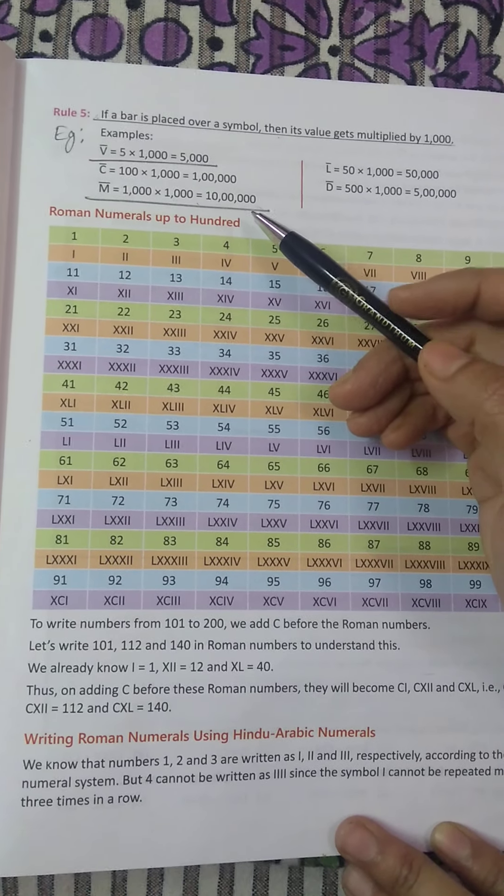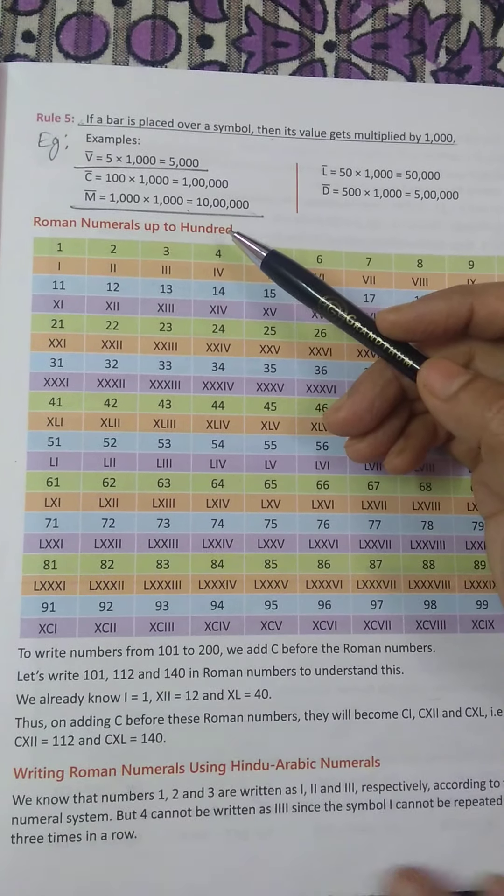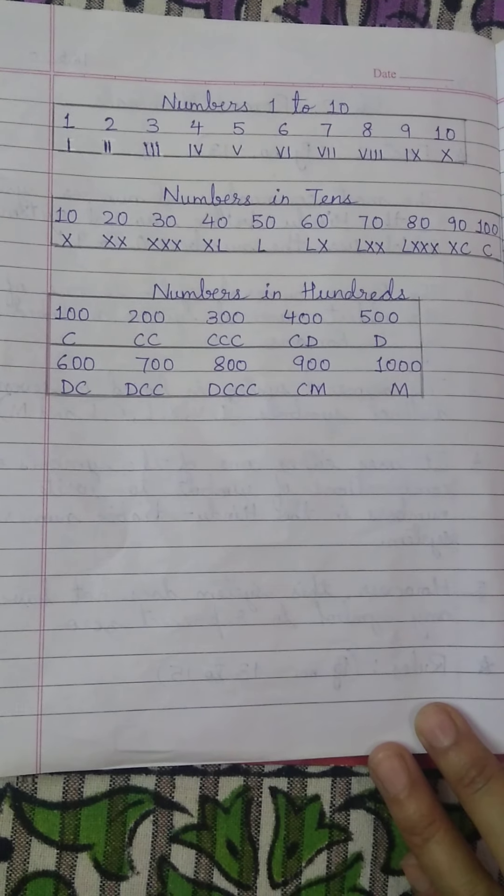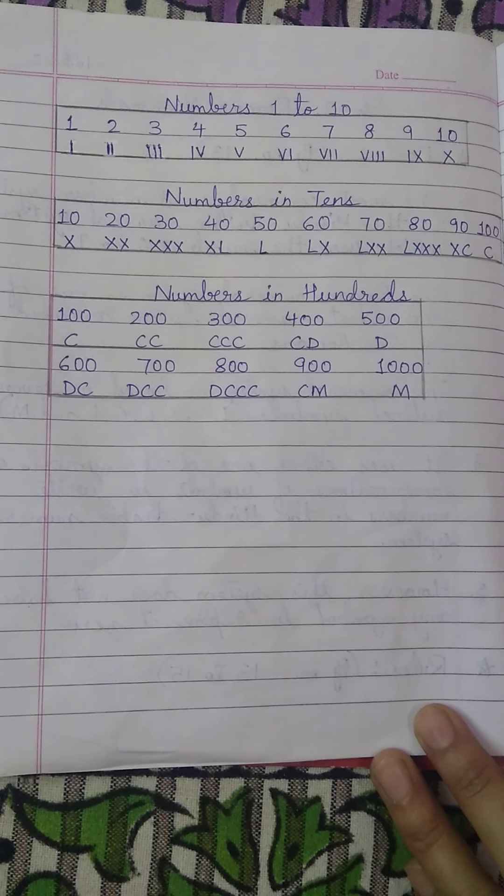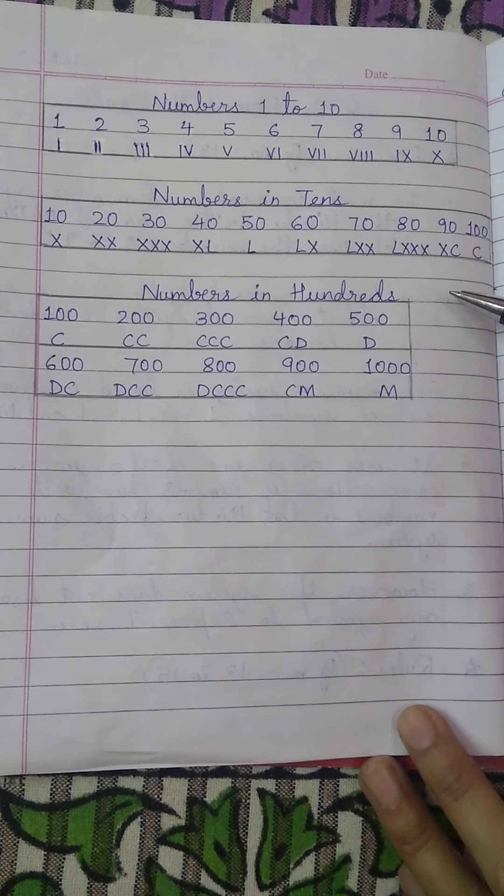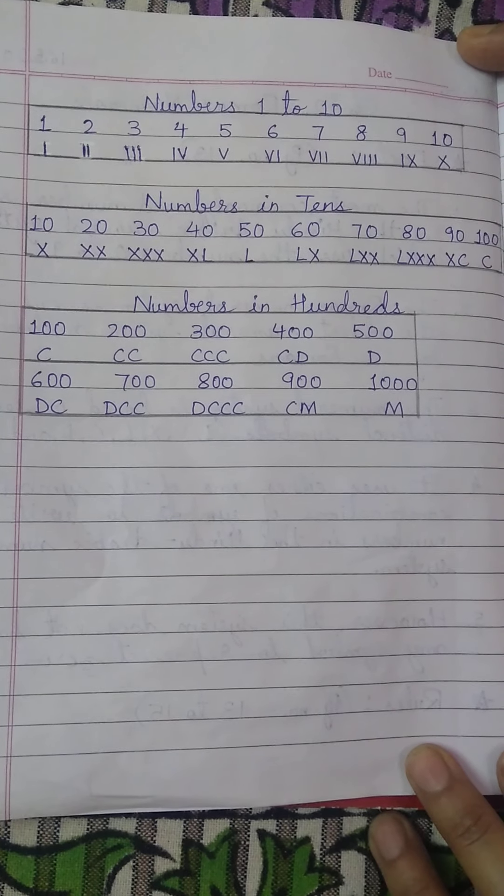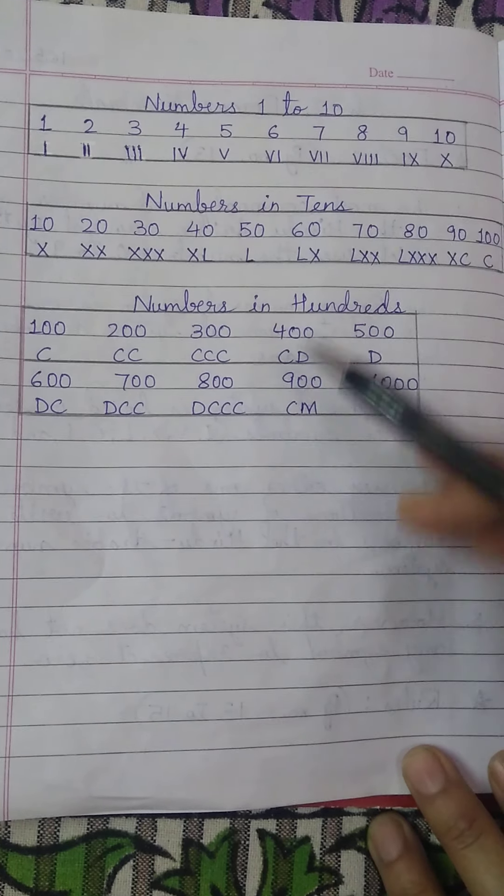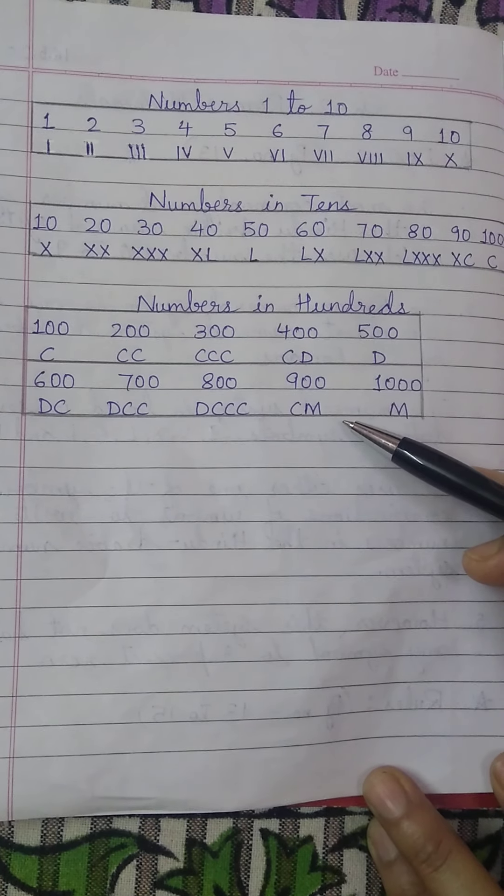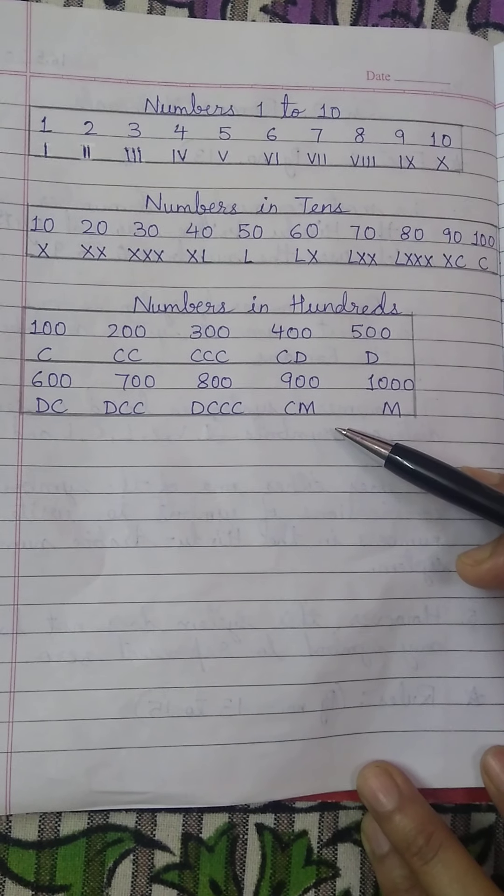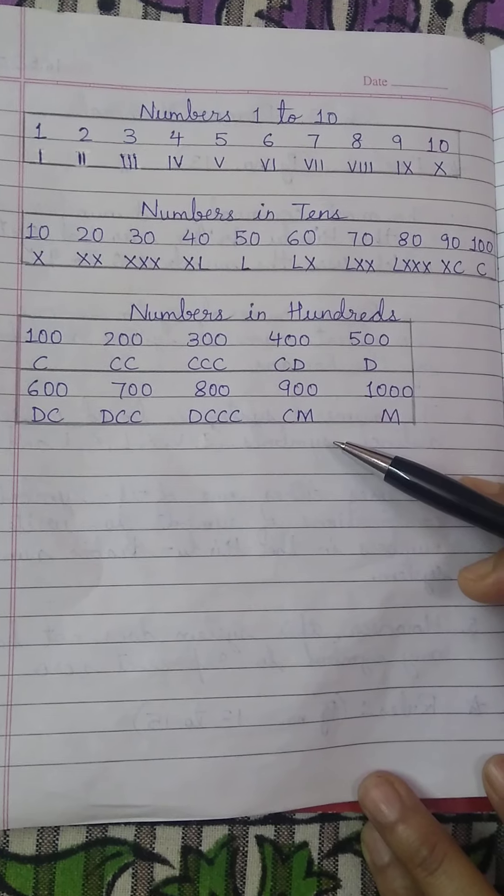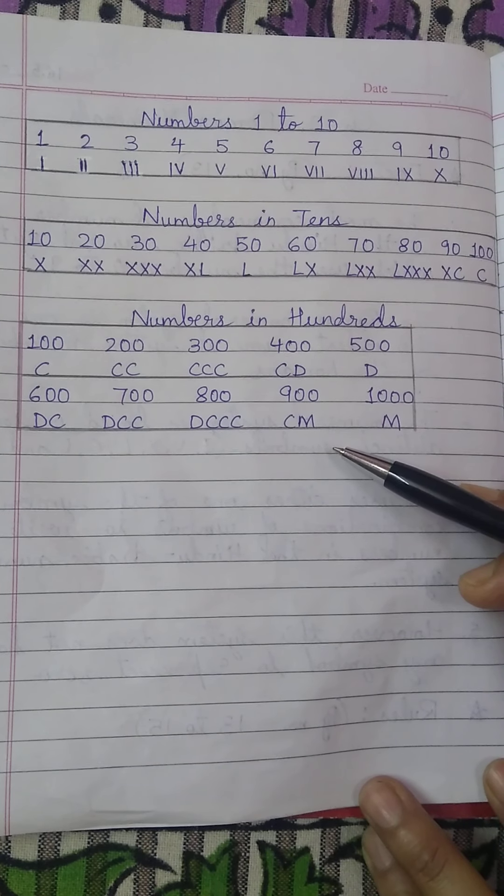Hope you have understood today's class and students, after writing those rules, five rules with two examples each, you will take another page and note down this table. This is very important table students. You may also refer that so note it down in your maths copy, in the third page. Hope you have understood. Have a great day. Bye bye students.